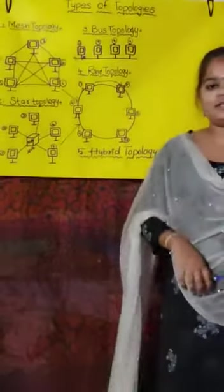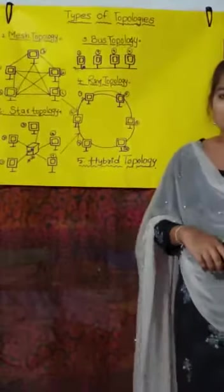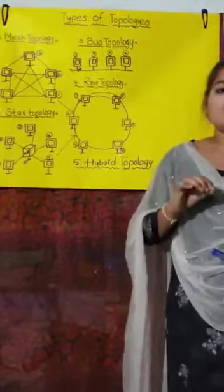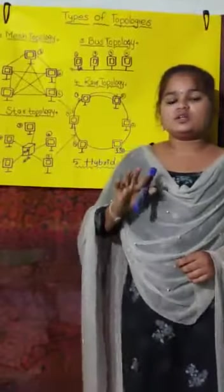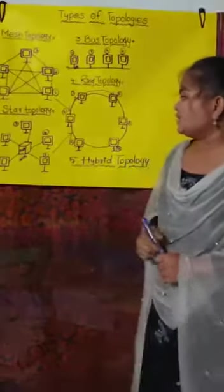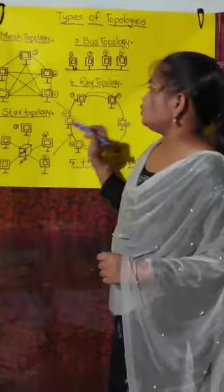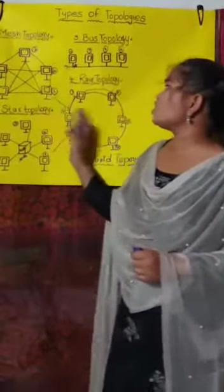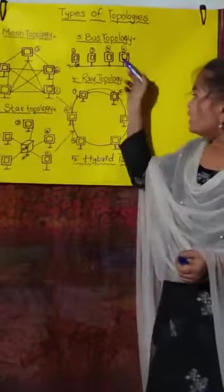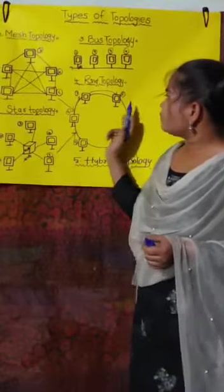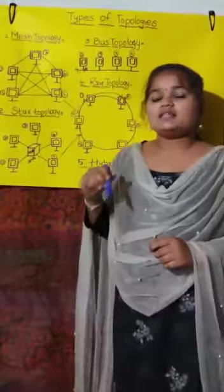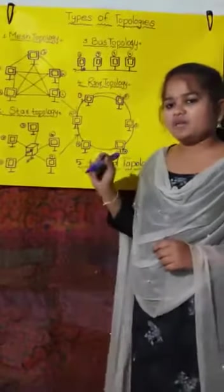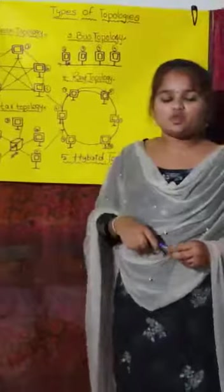Next is the hybrid topology. What is hybrid topology? In hybrid topology, two or more topologies are connected to each other. For example, star topology connected to ring topology, mesh topology connected to ring topology, bus topology connected to ring topology, or star topology connected to bus topology. When some topologies are connected to each other like this, it is known as hybrid topology. These are the types of topologies.